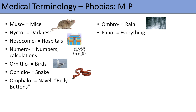Another prefix is pano, which means everything. So panophobia would be a fear of everything. This relates to the prefix pan, meaning all or everything — you can think of pancytopenia. The next prefix is podo, which means feet. So podophobia would be a fear of feet or something relating to the feet. You can think of podiatry when you think of podo.